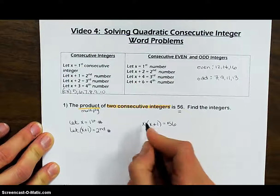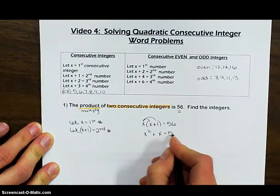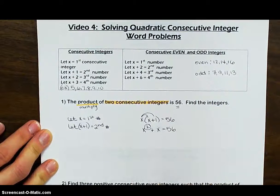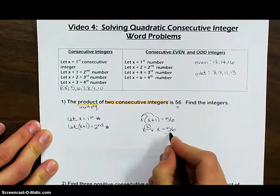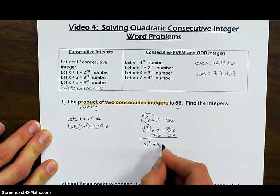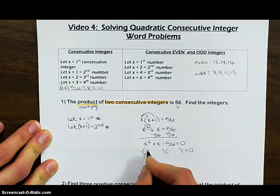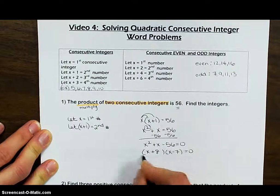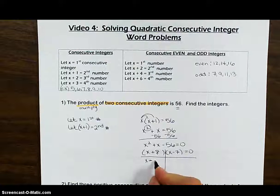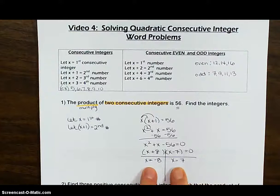Now we distribute and solve. x times x gives x squared, x times one gives x, so x squared plus x equals 56. Since x is squared, there are two answers, so we set the whole thing equal to zero by transposing 56: x squared plus x minus 56 equals zero. Factoring gives us (x plus 8)(x minus 7). Transposing: x equals negative 8 and x equals positive 7.